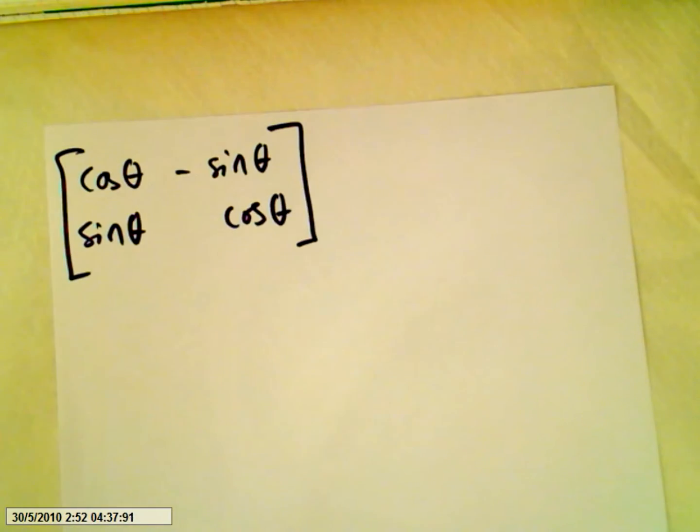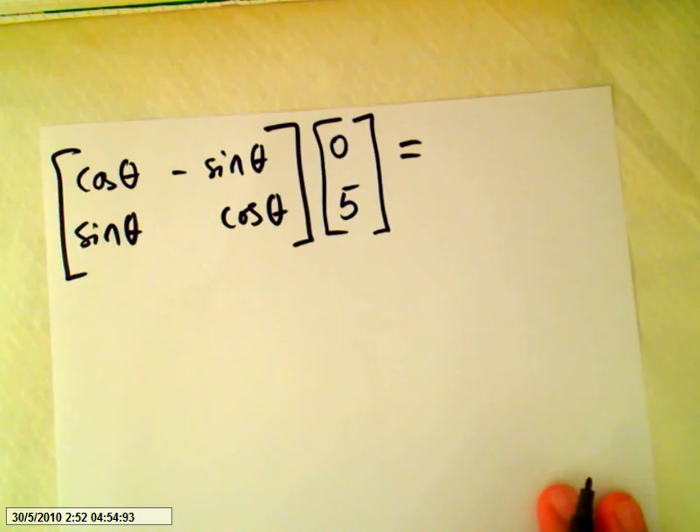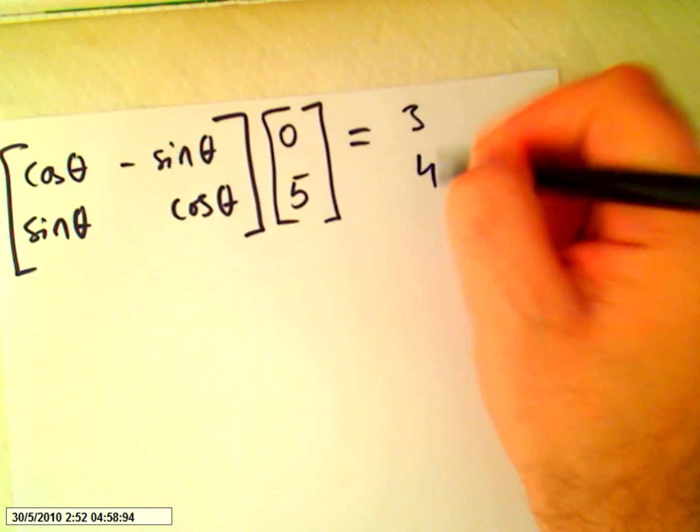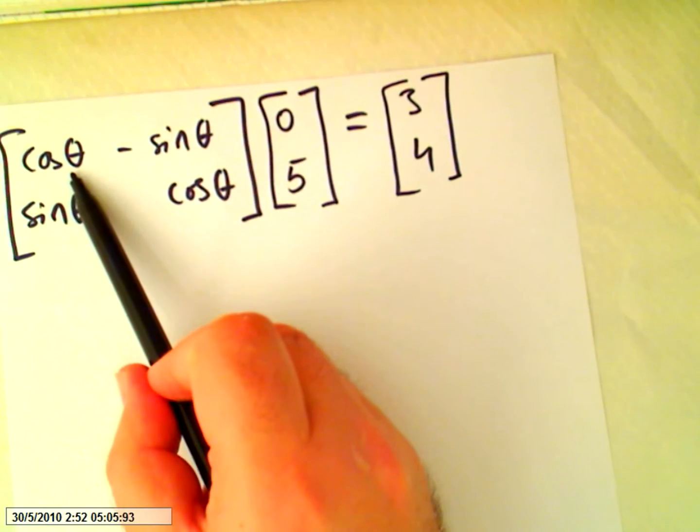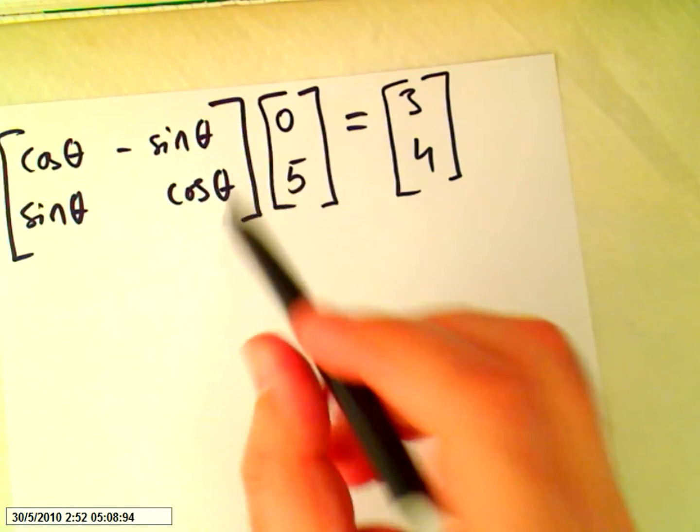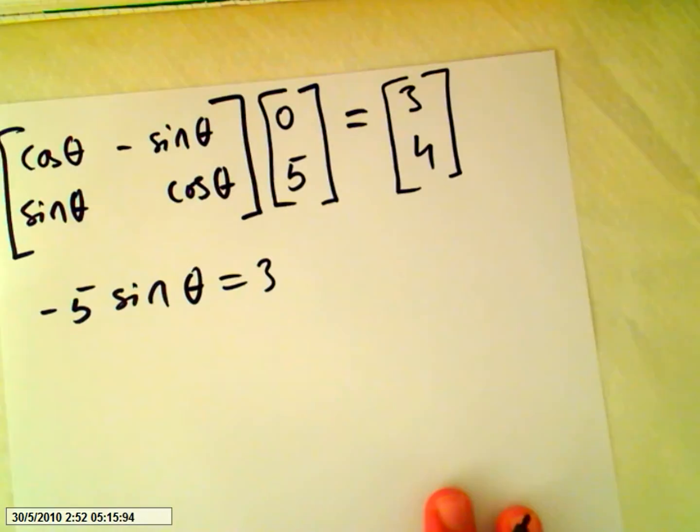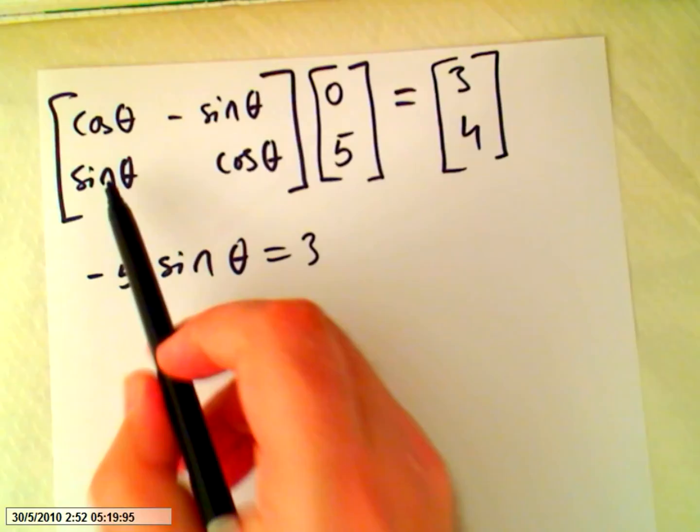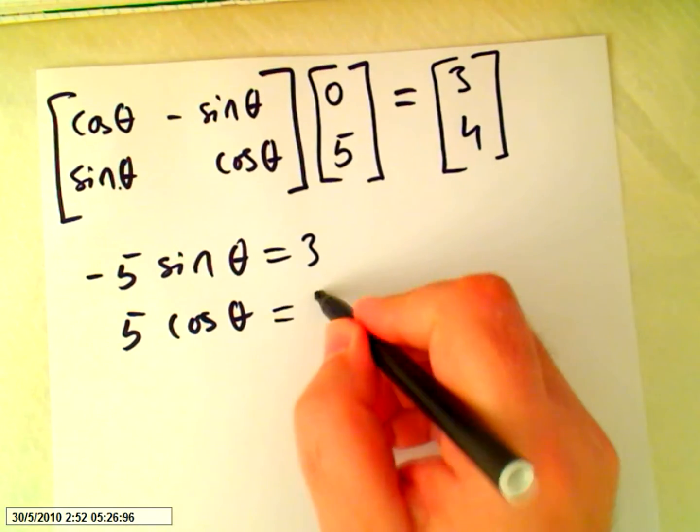And we know that this matrix will take points, the same points, so it will be 0, 5, transformed or taken into 3, 4. So Cosine Theta of 0 is 0, so we get minus 5 Sine Theta equals 3. And Sine Theta times 0 is 0, so 5 Cosine Theta equals 4.